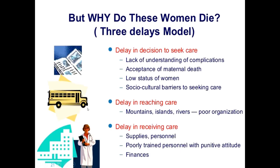Arranging transportation, community participation, intersectoral coordination, and proper referral reduces delay in reaching care. Providing safe access to higher healthcare facilities for those delivering at home also helps. Motivating and training staff, ensuring proper reference systems, equipment, supplies, good attitude, and provision of finances will reduce the third type of delay. By targeting all these strategies to reduce the three delays, we can reduce maternal mortality. Thank you very much for your concentration. If you have any questions, I am available in the comment section.